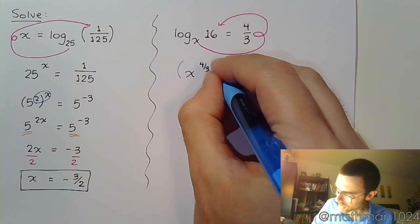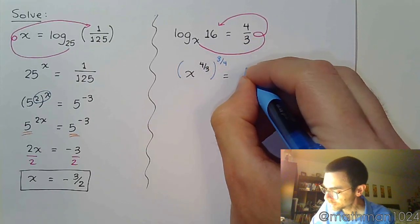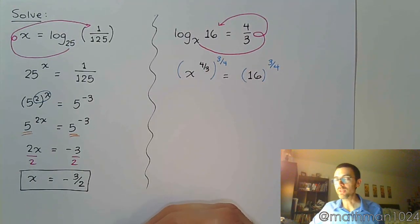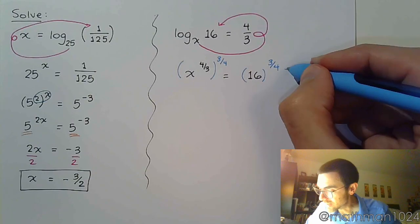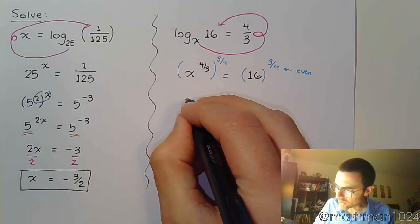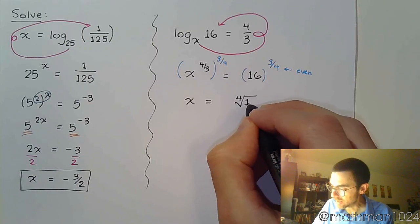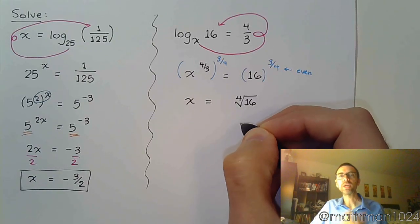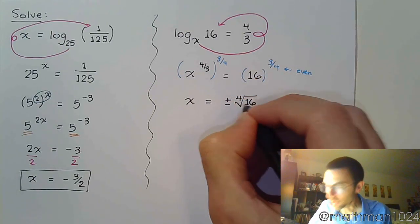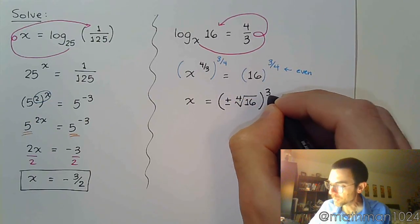I see 4 thirds, so I'm going to raise both sides to the reciprocal power, which is 3 over 4. The problem with me doing this is that since this guy is even, that means I'm basically taking an even root. On the left side, I get x. Over here, this becomes the 4th root of 16. But since I'm taking a 4th root, that means this is slightly connected to the square root property, and there's going to have to be a plus or minus that comes out of that as well, raised to the 3rd power.